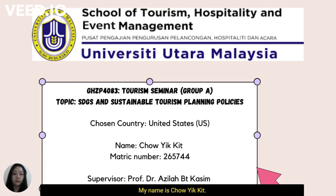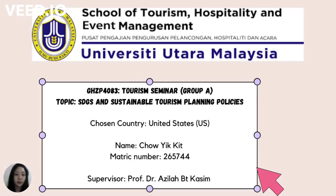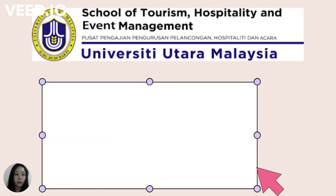Hello everyone, my name is Chao Yigit and my metric number is 265744. In this video I would like to present the best practice of tourism planning and development in the United States.